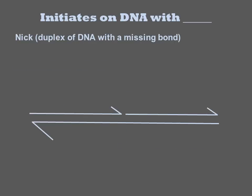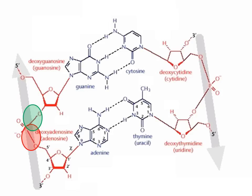Some enzymes can operate on NICs while others don't. A NIC is when one side of the DNA is broken into two molecules. All the atoms, including the 5' phosphate, are present in the NIC, but the atoms are just not fully attached. It is the bond shown in green that is broken in a NIC.